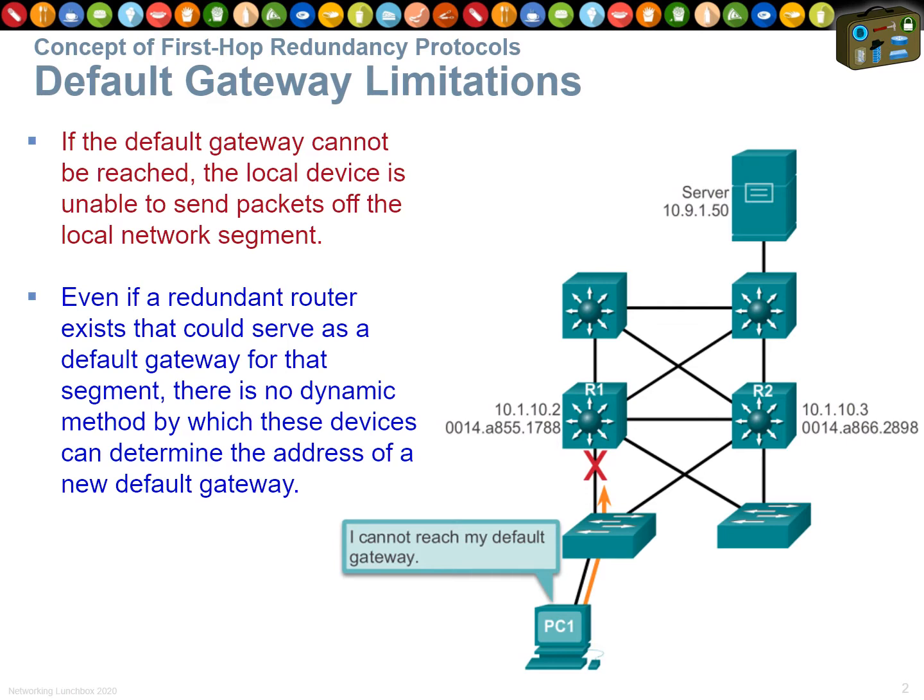We've got our core distribution and access model and everything's running fine, but then we've got an interface problem on R1. We've got R2 sitting there, but PC1 says it can't reach its default gateway anymore — it's cut off from the network, even though there's all this lovely redundancy in the back end. PC1 can't actually utilize it or get to it.